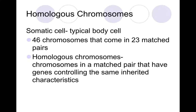Regarding homologous chromosomes, let's first talk about what a somatic cell is — that is your typical body cell. In human beings those have 46 chromosomes, 23 that come in 23 matched pairs. When we're talking about homologous chromosomes, we are talking about matched pairs of chromosomes that have genes controlling the same inherent trait on each one. On those chromosomes I might have the trait for hair color on each one. Remember the prefix homo means the same.